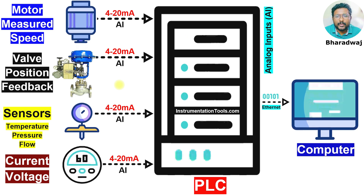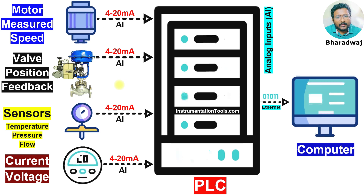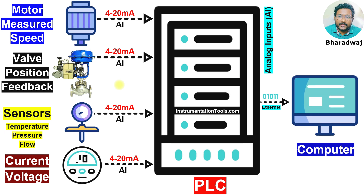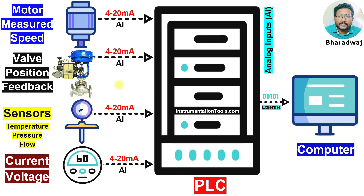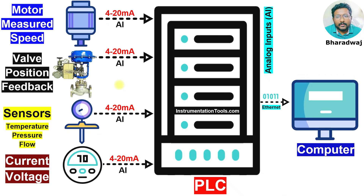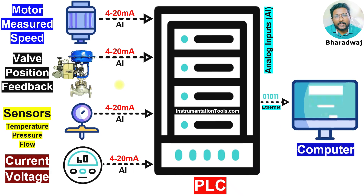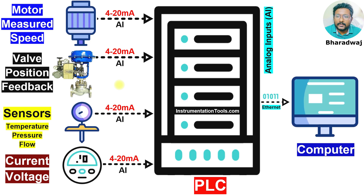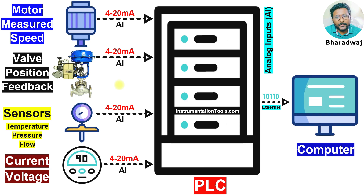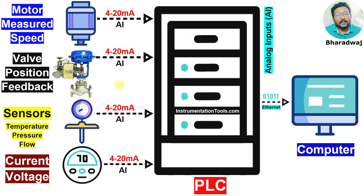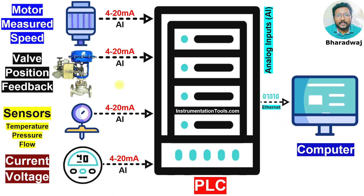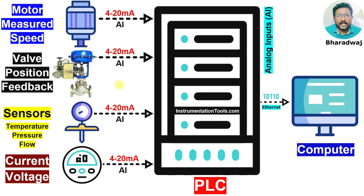There are so many variables available — all these are analog inputs. In the previous video, we discussed one example: the level transmitter. The same concept you can apply for all these instruments and parameters. All analog inputs based on current signal use the same concept.